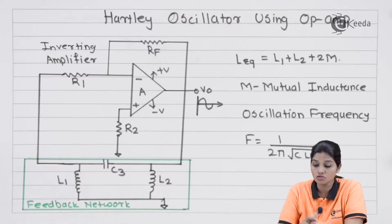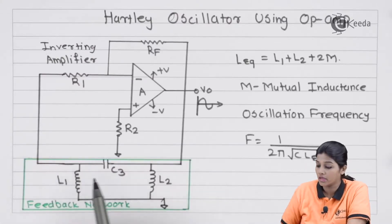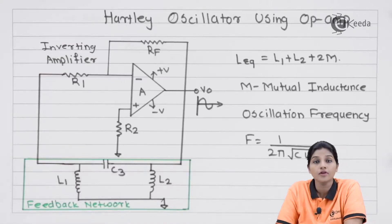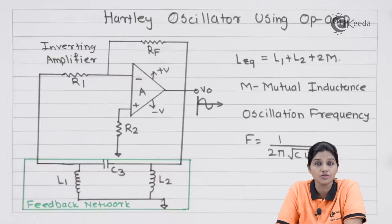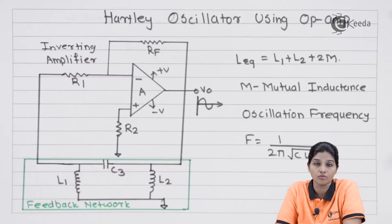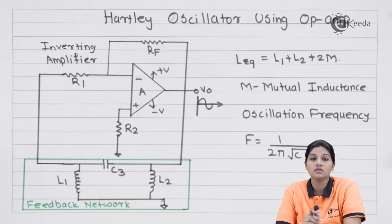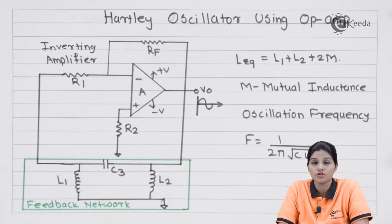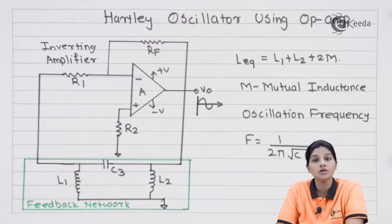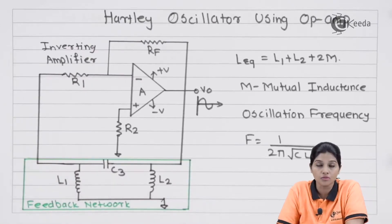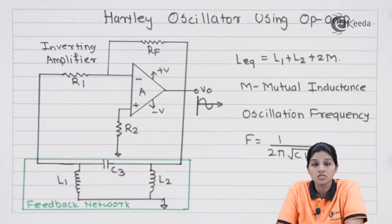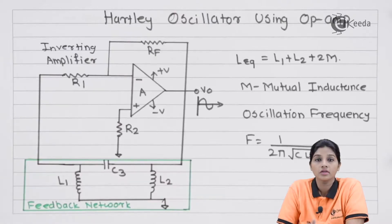The feedback network consists of a parallel combination of inductor and capacitor; therefore, the Hartley oscillator is considered one type of LC oscillator and is basically used to provide high-frequency signals at the output. These high-frequency signals come under the video range and therefore they are also called video frequency oscillators. The coils L1 and L2 are wound on the same core, so we need to consider the mutual inductance between them.